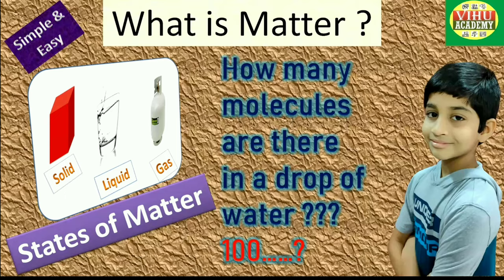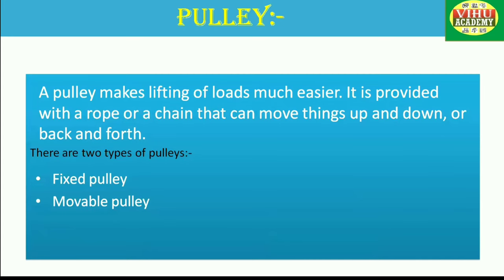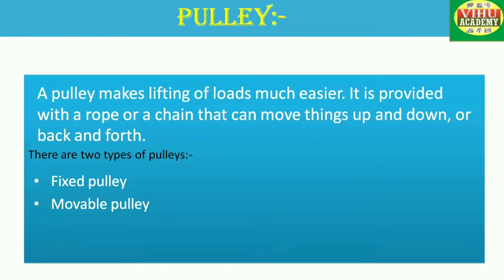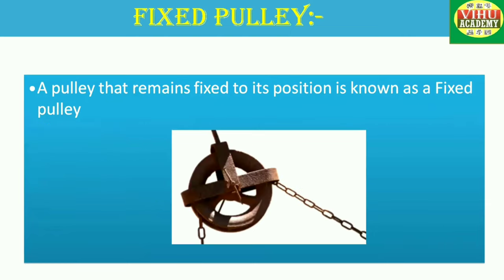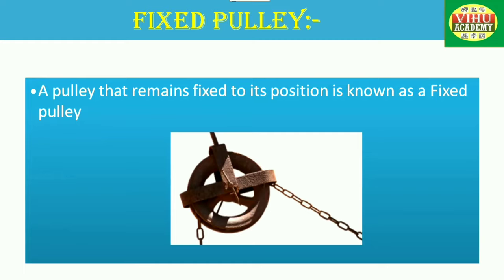So now let us get back to the topic. What is a pulley? A pulley makes lifting of loads much easier. It is provided with a rope or chain that can move things up and down or back and forth. An elevator is an example of a pulley. Pulleys are of two types: a fixed pulley and a movable pulley. A fixed pulley remains fixed to its position and does not reduce or increase the force applied — it only changes the direction of the force.